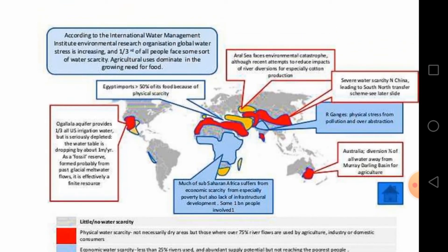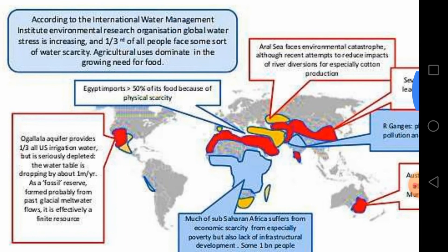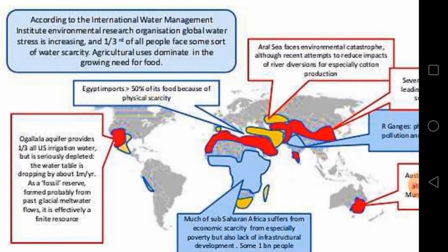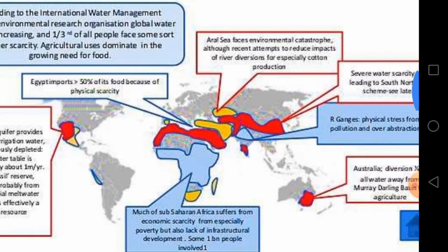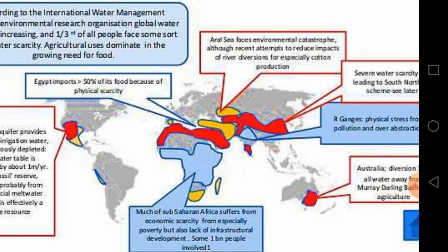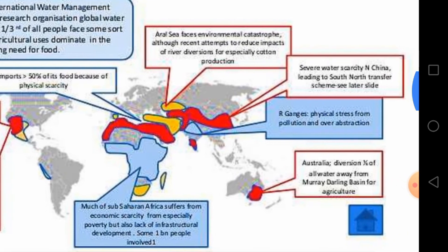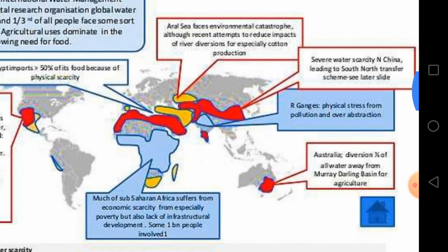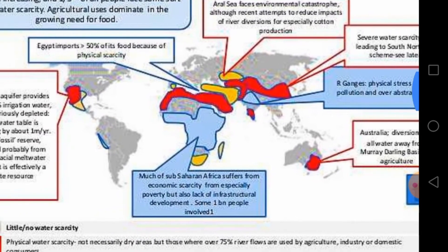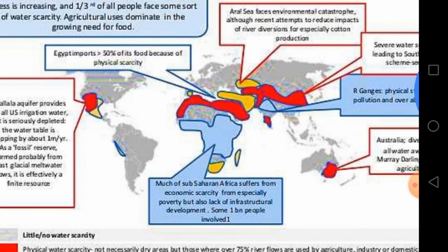According to the international water management institution of environmental research organization, global water stress is increasing, and one third of all people face some sort of water scarcity. Agricultural use dominates the growing need for food. This is the general system showing globally how people are facing water scarcity. Egypt imports 50% of its food because of physical scarcity — they are not getting proper food because of water scarcity problems. And severe water scarcity in China is leading to a South-North transfer scheme. China also is facing water scarcity.